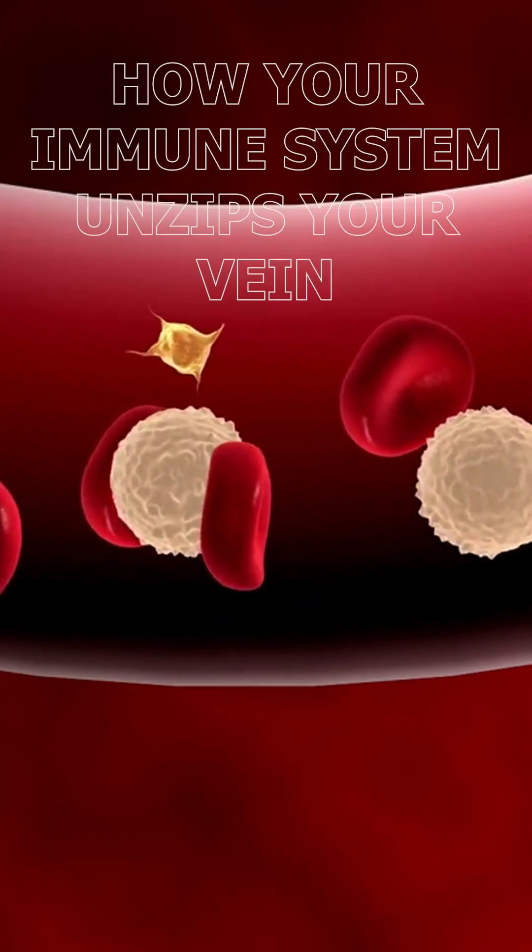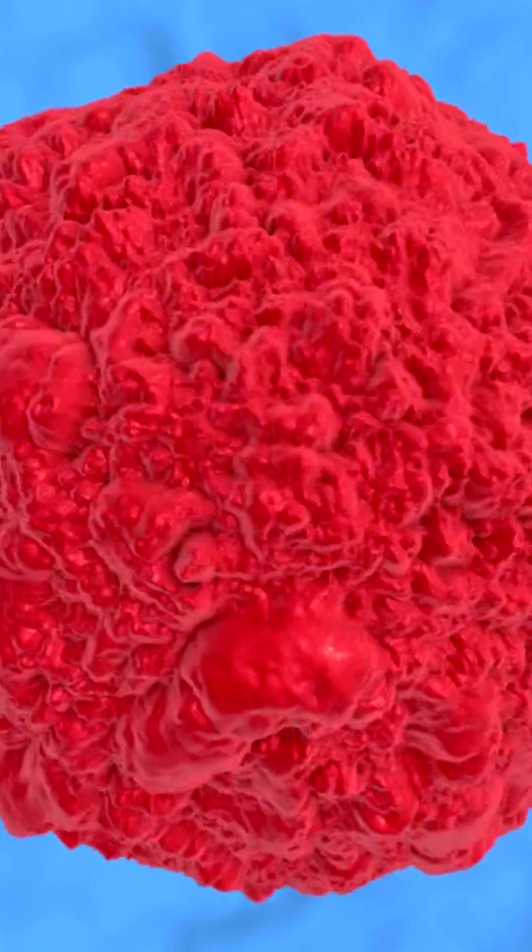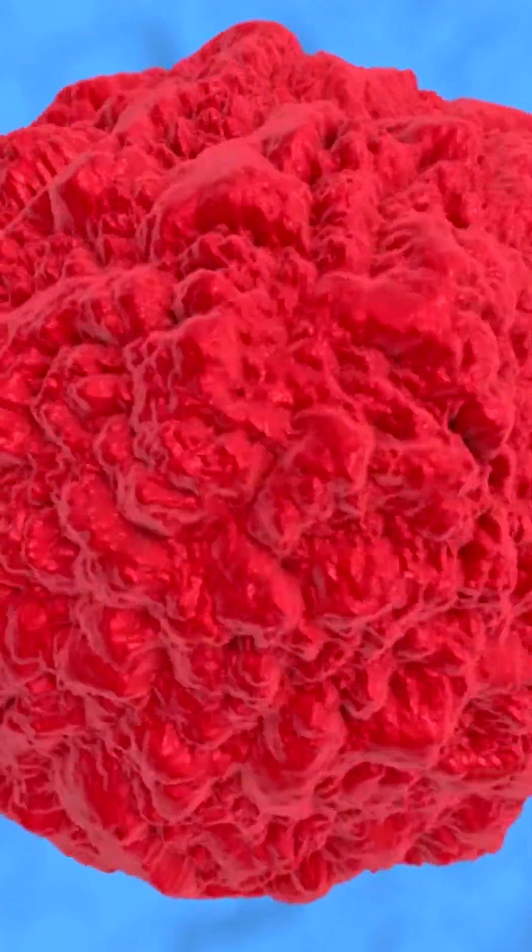How your immune system unzips your veins. Your veins are fortresses, sealed tight, but when infection strikes, your white blood cells have to break out. It's a perfectly planned molecular prison break.